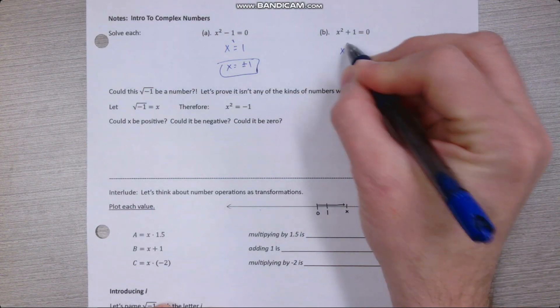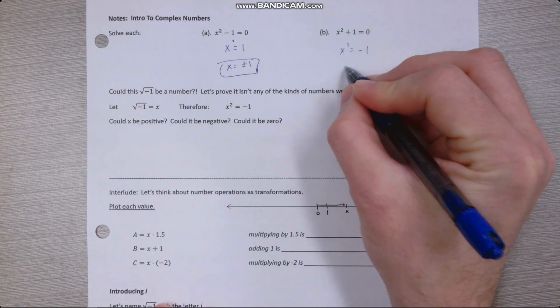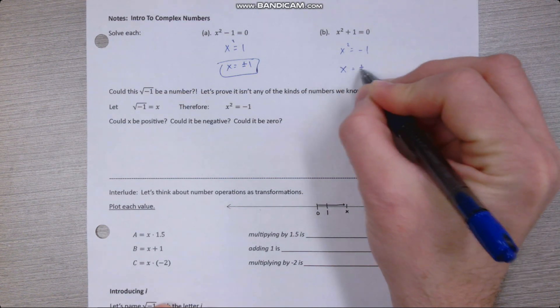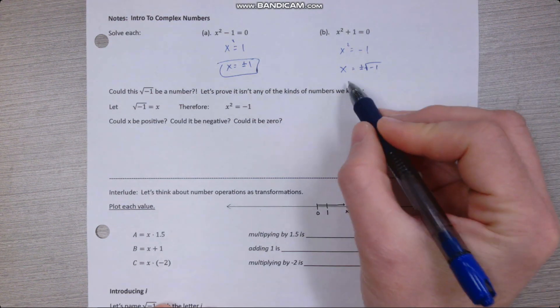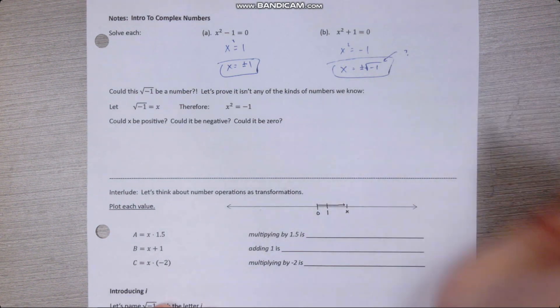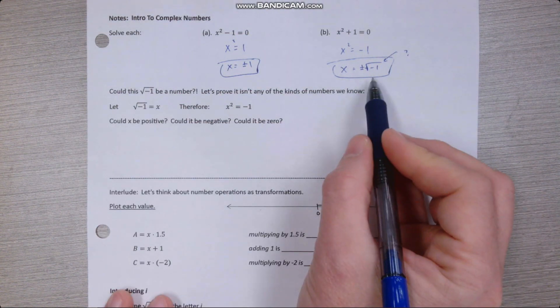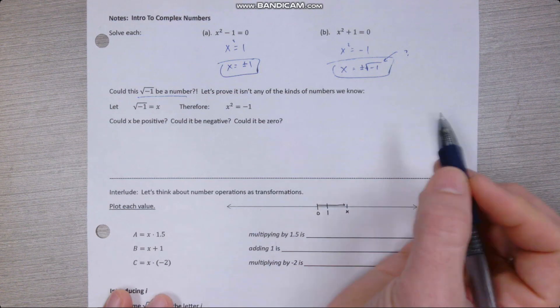What happens on this side, if we isolate x, is we get x squared is negative 1, and if we just try and mechanically take the square root of both sides, we have that x equals plus or minus square root of negative 1. But what is that square root of negative 1? It's not really clear what that should be. Could it be a number?